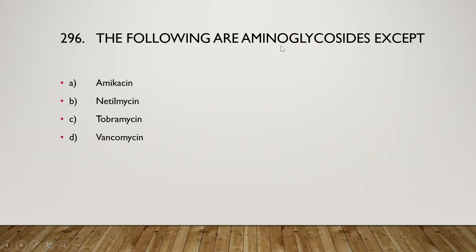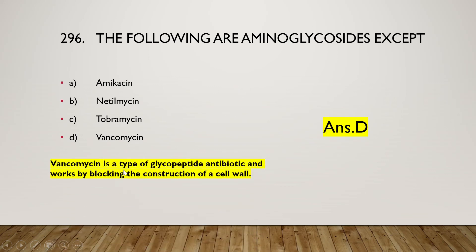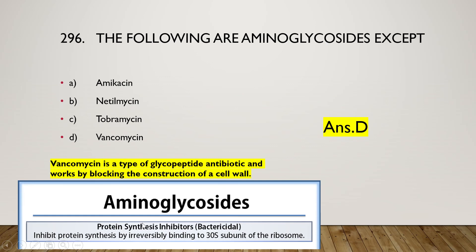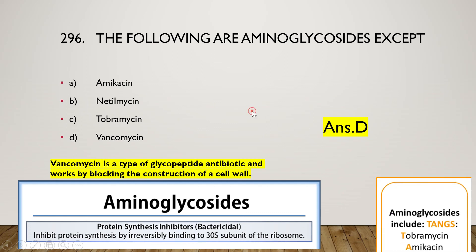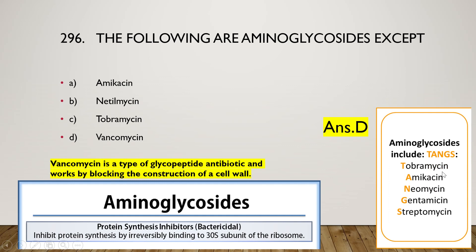The next question is: all of the following are aminoglycosides except (A) amikacin, (B) netilmicin, (C) tobramycin, or (D) vancomycin. The right answer is option D — vancomycin is not an aminoglycoside; it is a glycopeptide antibiotic that works by blocking cell wall construction. Aminoglycosides are bactericidal protein synthesis inhibitors that irreversibly bind to the 30S subunit of the bacterial ribosome.